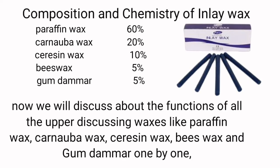Composition and chemistry of inlay wax: paraffin wax 60%, carnauba wax 20%, ceresin wax 10%, beeswax 5%, gum dammar 5%. We will now discuss the function of each of these components one by one in detail.